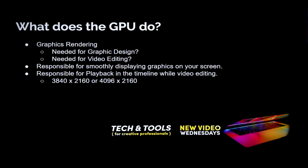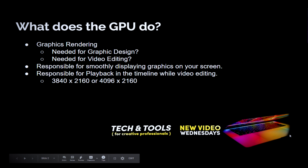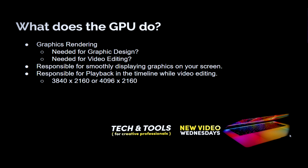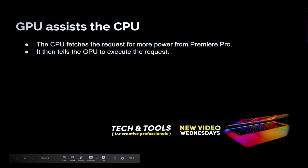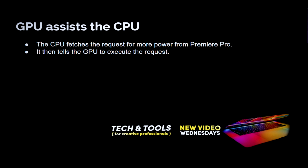Now that we understand what a GPU is used for, we can discuss its importance while video editing. If you are editing 4K footage in Premiere Pro, you have video files with a very large pixel ratio — either 3840×2160 or 4096×2160. These are large files that take a lot of power to produce on your screen, and most CPUs become quickly overloaded because they are not optimized to produce the size of image you are trying to display. So the GPU assists the CPU: the CPU fetches the request from Premiere Pro, decodes the information, and then executes a message to the GPU telling it to render the video files.